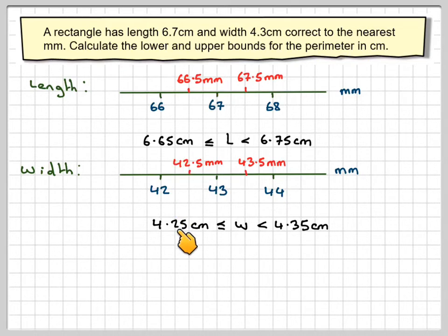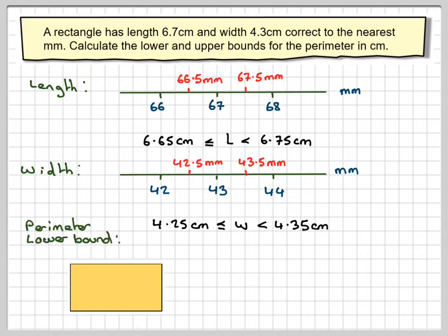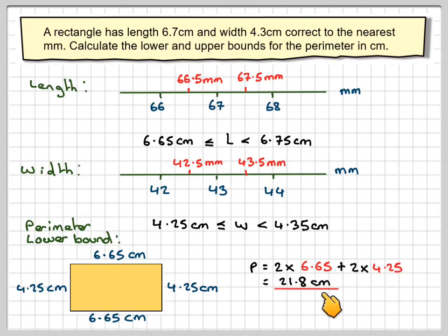For the lower bound for the perimeter, we need to take the lower bounds for the length and the width. So here we have our rectangle. The length lower bound will be 6.65, and the width will be 4.25. The perimeter is the distance round the outside of the shape. So that will be 2 lots of 6.65 plus 2 lots of 4.25, which is 21.8 centimeters.